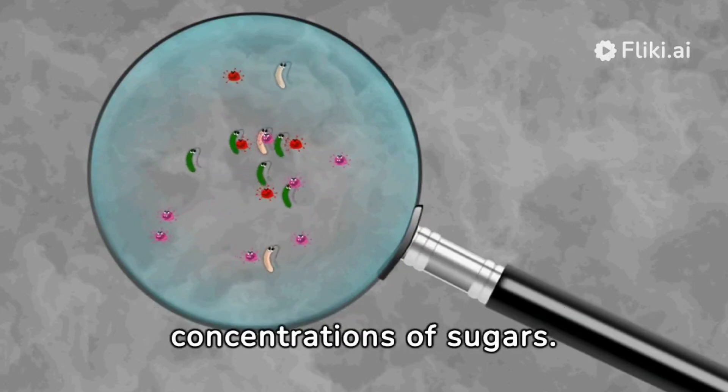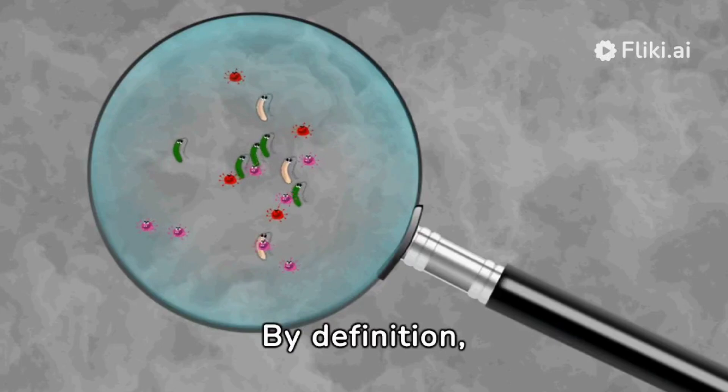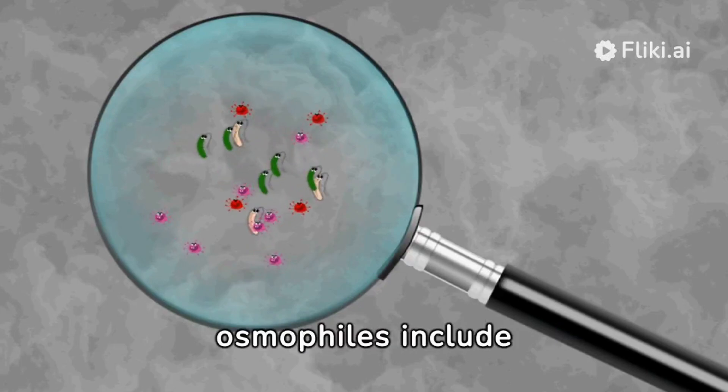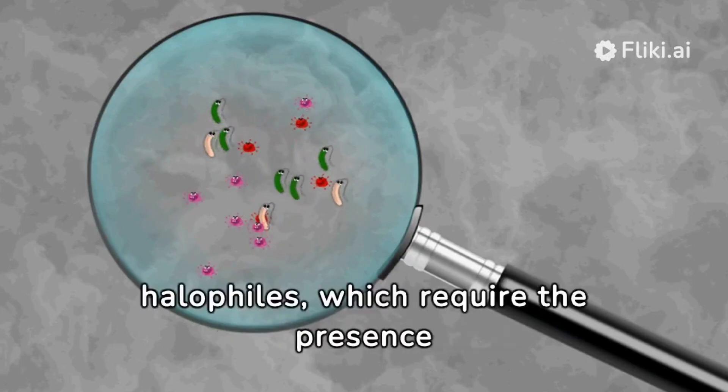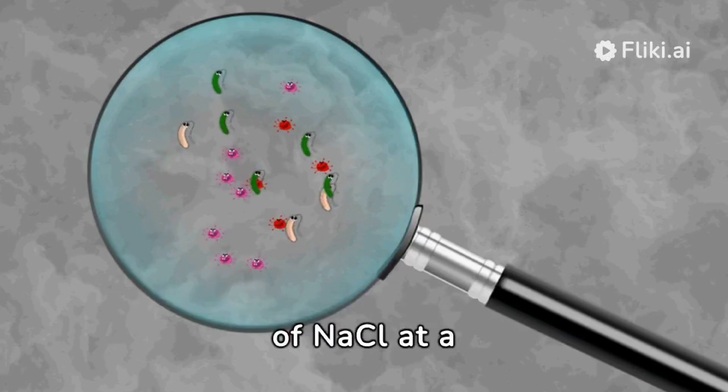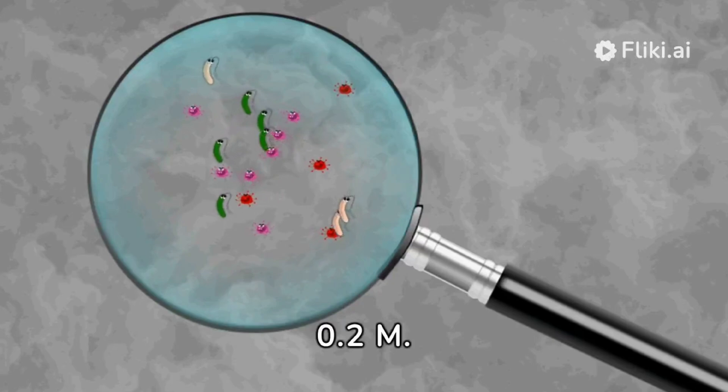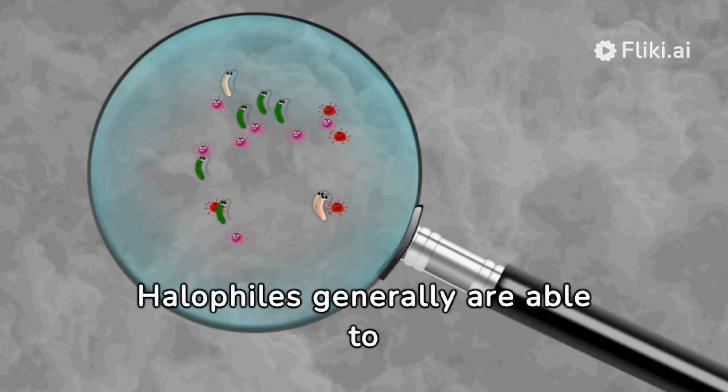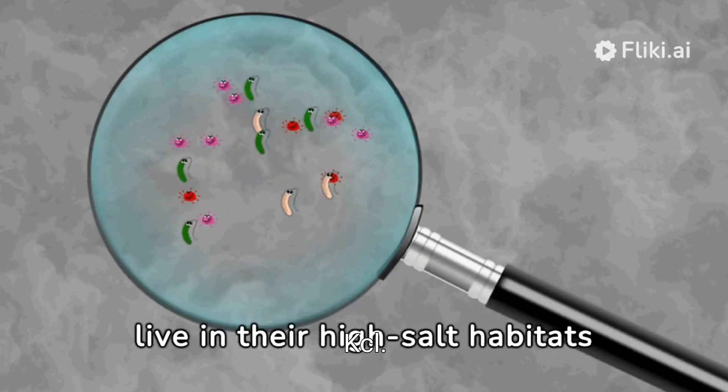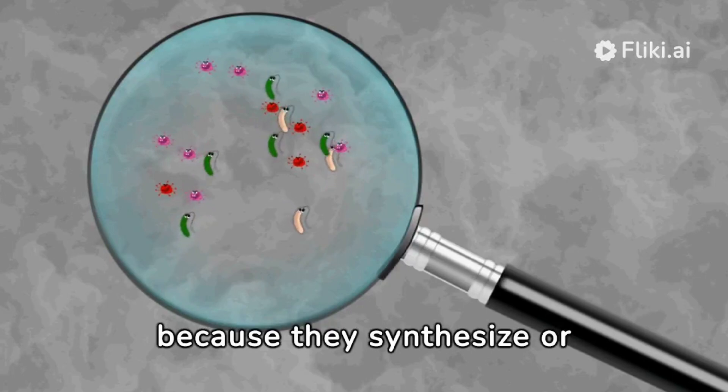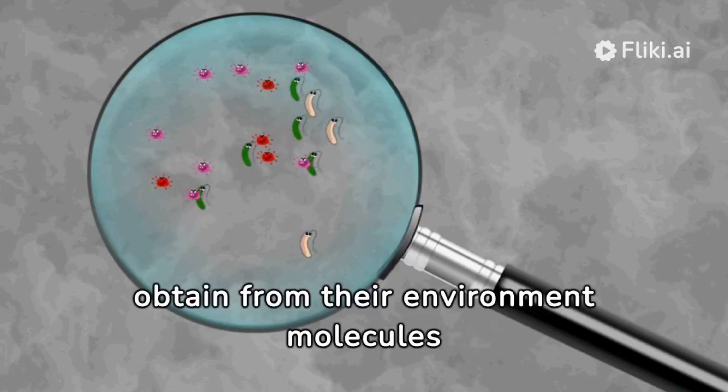Osmophiles can be classified further as halophiles. Halophiles, as the name suggests, require the presence of NaCl. They need NaCl at a concentration above about 0.2 molar. Halophiles are able to live in high salt concentrations by synthesizing or obtaining from their environment molecules called compatible solutes.